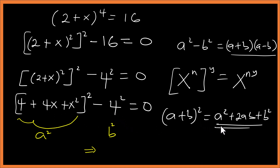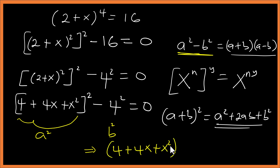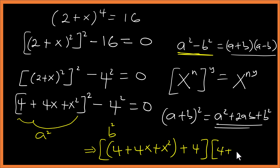Everything here is behaving like A and the 4 is B, so we have A² minus B². Applying the difference of two squares gives us (4 + 4x + x² + 4)(4 + 4x + x² − 4) equal to zero.